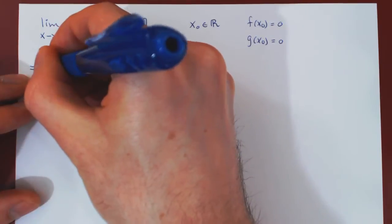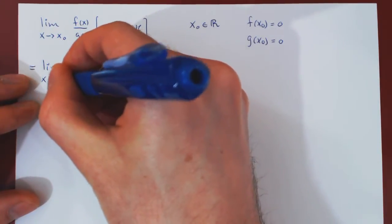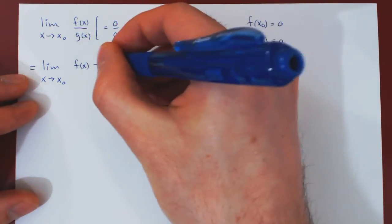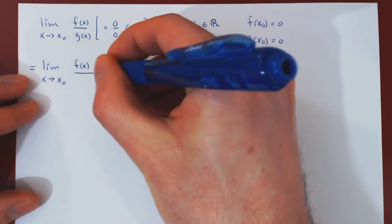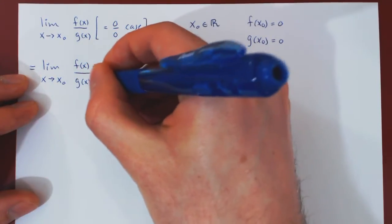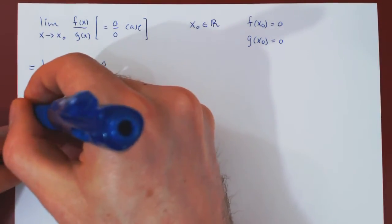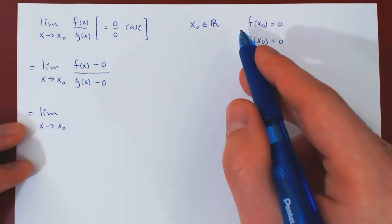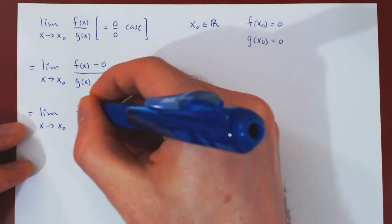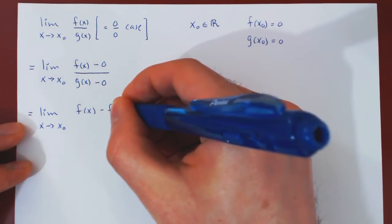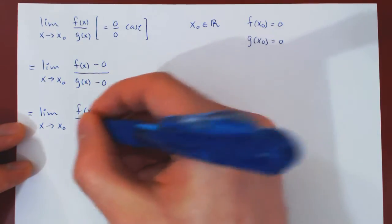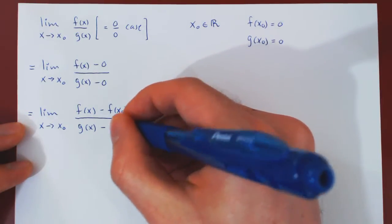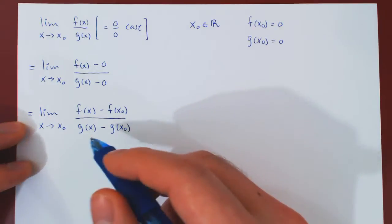Let me do something that may seem silly at first but will quickly become interesting. I will simply rewrite f(x) as f(x) - 0, and do the same for g(x). But now I can replace 0 by f(x₀) on the numerator, and I can replace 0 on the denominator by g(x₀).